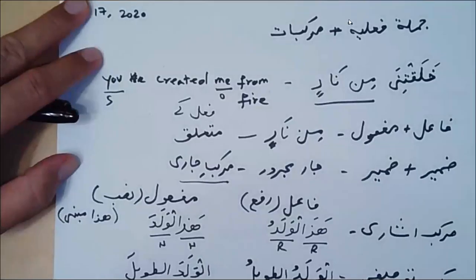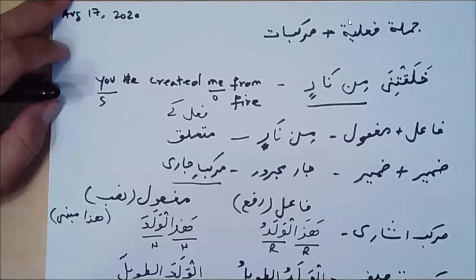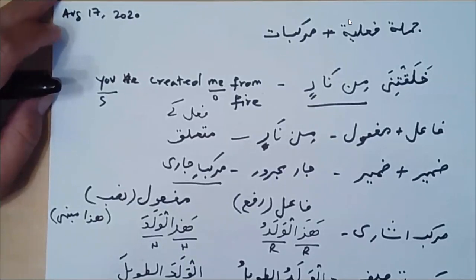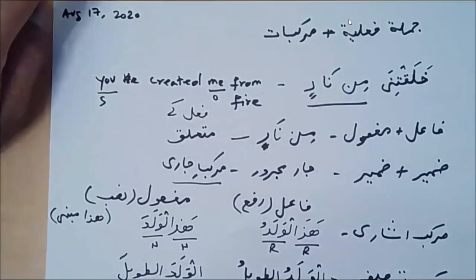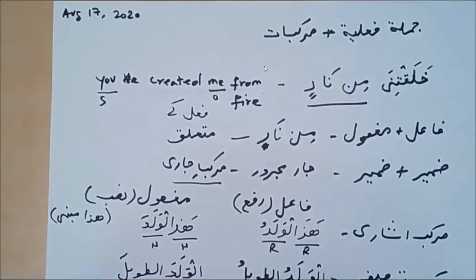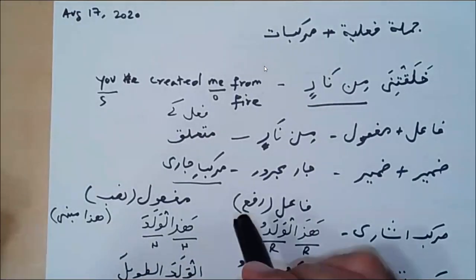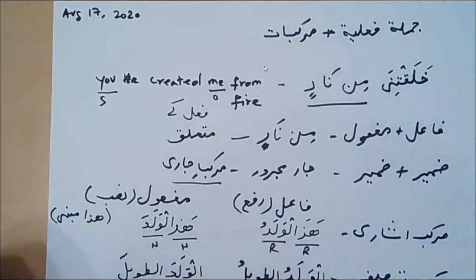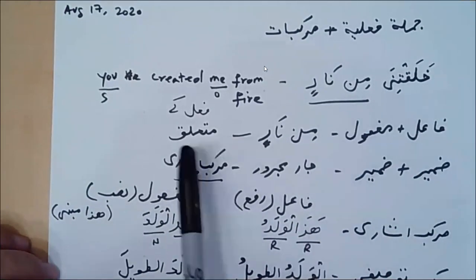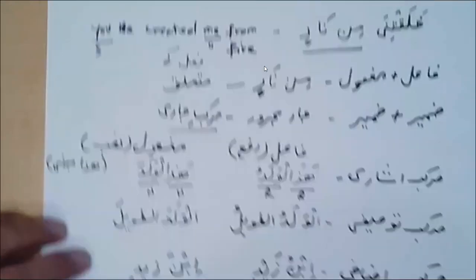So murakkab jari acts as mutallik — it provides additional information about the fi'l but is not acting as a fa'il or maf'ul. Remember the difference: murakkab jari is mutallik about the action, not a fa'il or maf'ul. You're right that the category of murakabat includes murakkab nakisa — when a murakka comes in a sentence and gives additional information about the action.